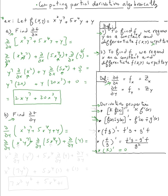Now x² is regarded as a constant, so we take it outside using the constant multiple rule: x² times the partial of y⁷ with respect to y. Similarly, 5x⁴ is constant, giving 5x⁴ times the partial of y with respect to y. Then we add the partial of y with respect to y. The partial of y⁷ is 7y⁶, the partial of y with respect to y is 1, and the last term is also 1. So the result is 7x²y⁶ + 5x⁴ + 1.